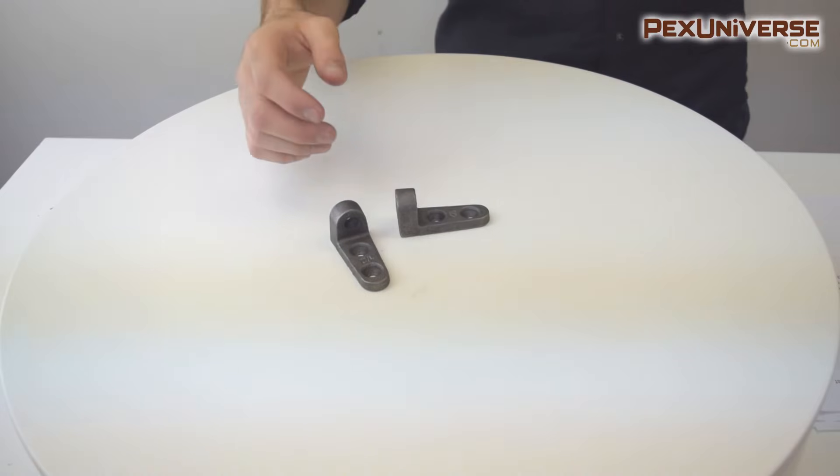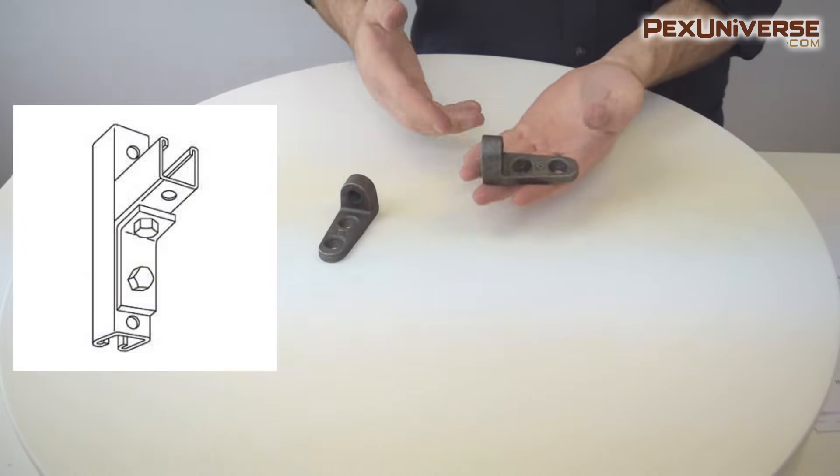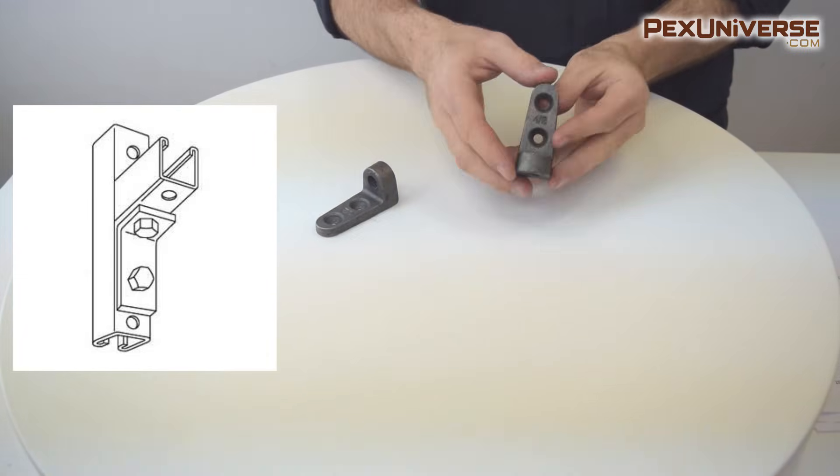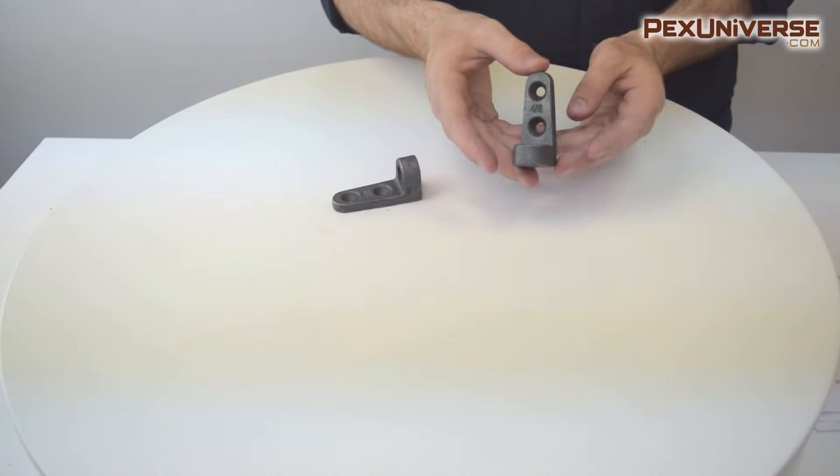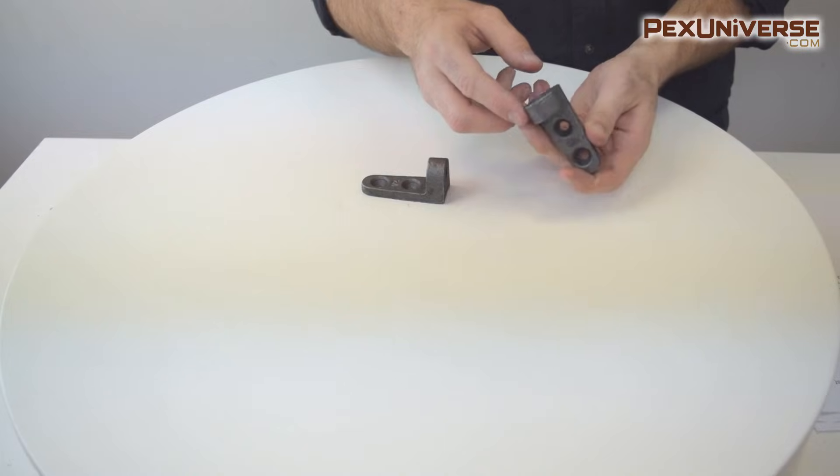Side beam connectors are designed for attaching rods to the side of wooden beams or walls. It secures a standard threaded rod, either 1/2 inch or 3/8 of an inch, to the side of a wooden or metal beam.